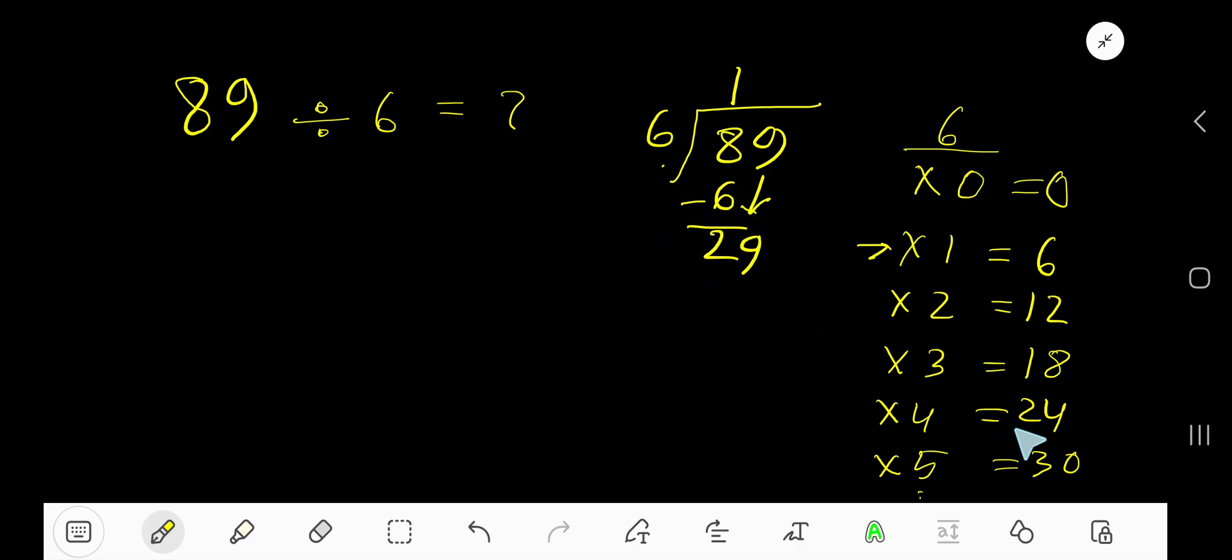6 goes into 29 how many times? 5 times is 30, so 29 means 4 times. 4 times 6 is 24.